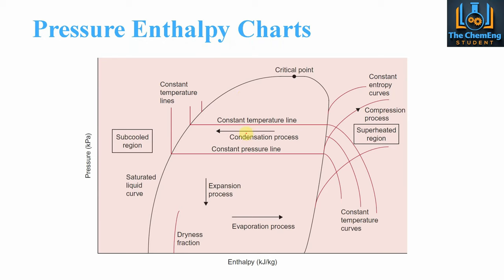What we have here is a plot of pressure against enthalpy. This black line is our saturated line. To the left side of the curve is the saturated liquid phase — this is the saturated liquid line. After the critical point on the right side, we have the superheated region where only the vapor phase is present. Within the curve itself, we have a mixture of both liquid and vapor.